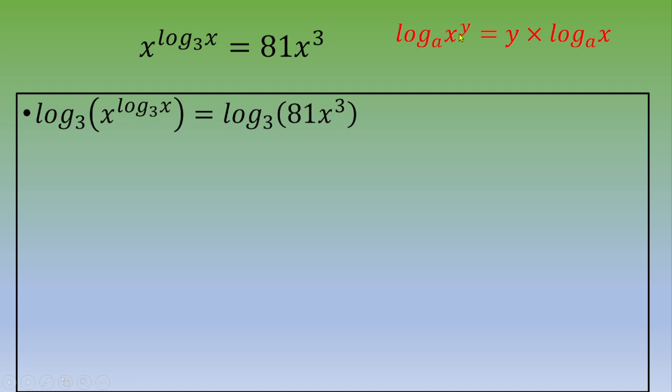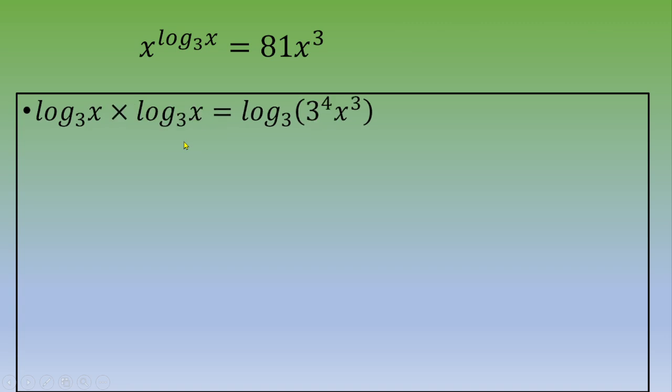If we apply this formula to the left side of the equation, we end up with log base 3 of X times log base 3 of X equals log base 3 of 81. This is 9 times 9, which is 3 squared times 3 squared, which is 3 to the power of 4, and this is X cubed.